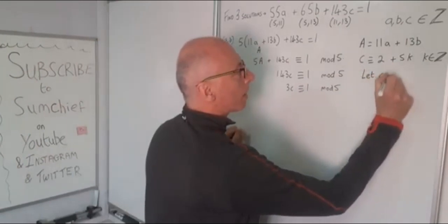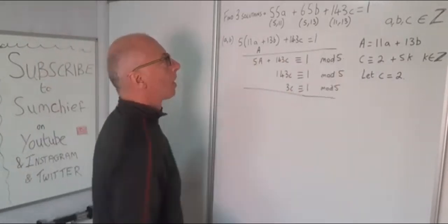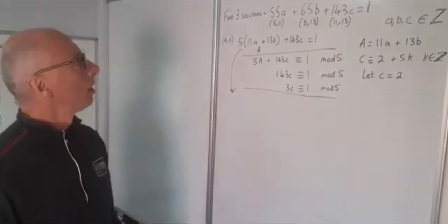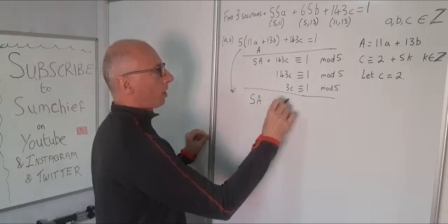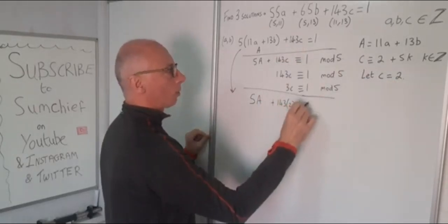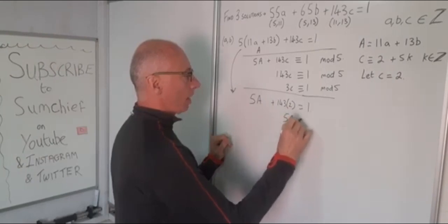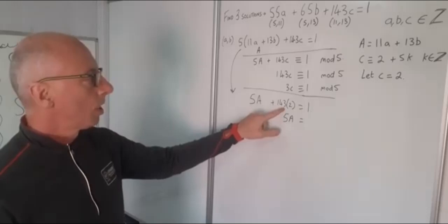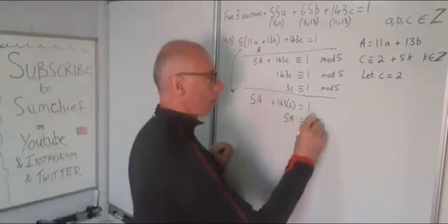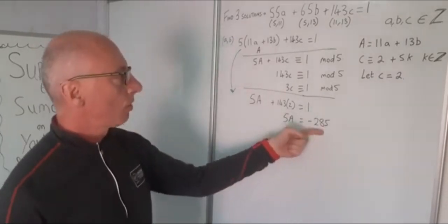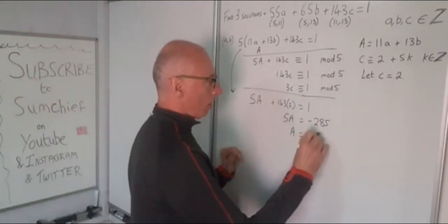Let C equal 2. So now bringing this back down, I've got 5A plus 143 times 2 equals 1. So now with simple algebra, 5A equals 1 minus 143 times 2. 143 times 2 is 286, and 1 minus 286 is minus 285. Now I know I'm going to get an integer solution for this because I went through this part of the calculations. So A equals minus 57.